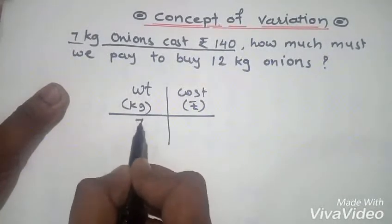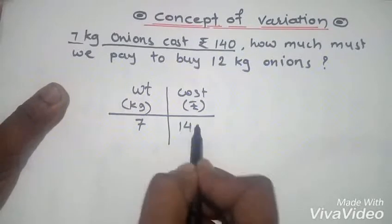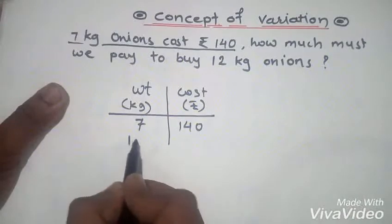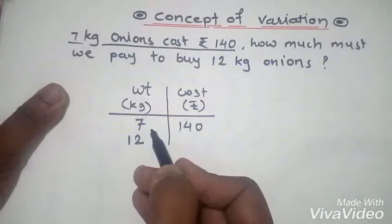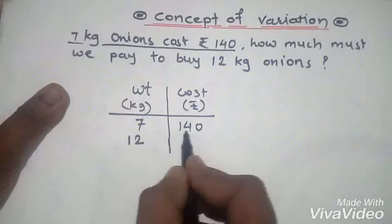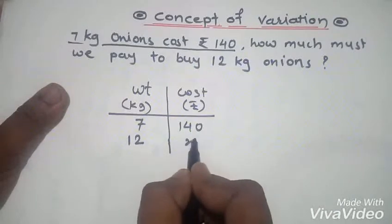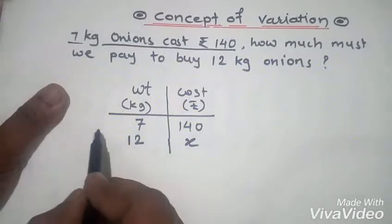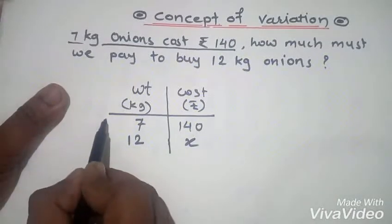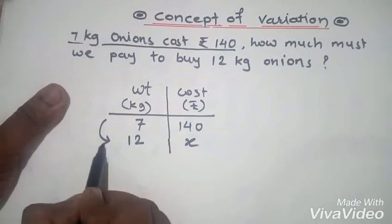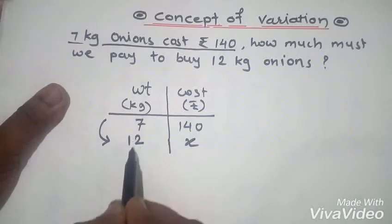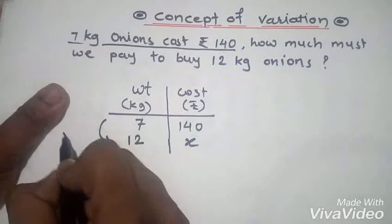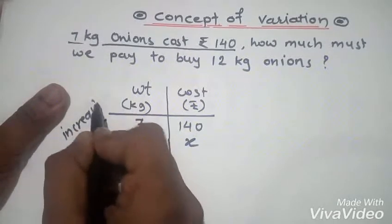The weight is 7 kg and the cost is ₹140. Now we need to buy 12 kg of onion, so 12 goes in the weight column and I need to find the cost. Previously we had 7 kg and now we need 12 kg — the change in weight is increasing.